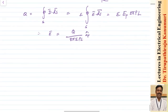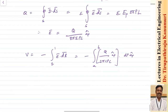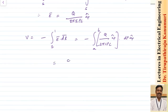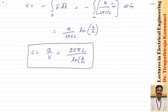The electric field is in the radial direction a_rho. The potential V equals the integral from 2 to 1 of E·dL, which is the integral from a to b of q divided by 2π·epsilon·rho·L in the a_rho direction, dot product with d_rho·a_rho. Evaluating this gives V equals q divided by 2π·epsilon·L times ln(b/a). Therefore, capacitance C equals q divided by V equals 2π·epsilon·L divided by ln(b/a). This is the capacitance of the coaxial capacitor or coaxial cable.